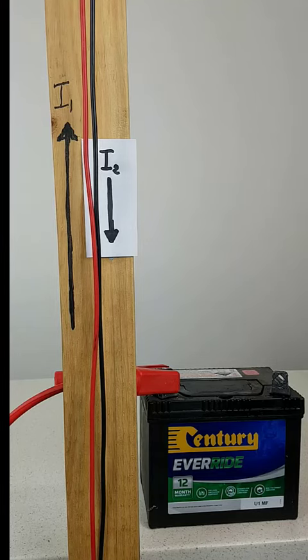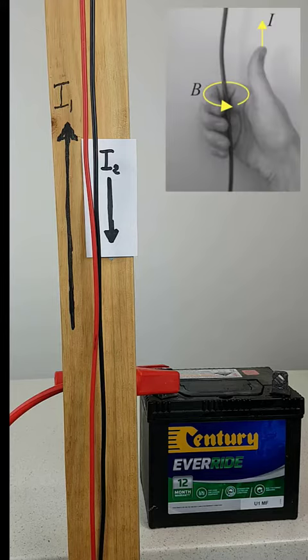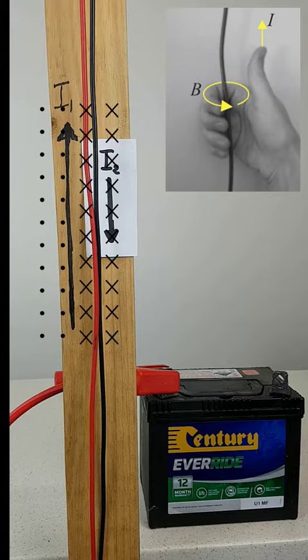The wire on the left carries a current upwards, producing a magnetic field around this wire. The right-hand grip rule tells us this must be into the page in the vicinity of the wire on the right.